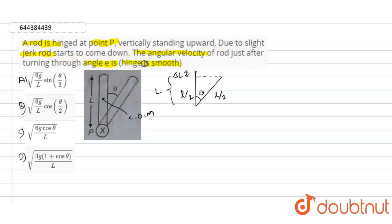This is the question that is given. So here we need to find out the value of the angular velocity of the rod just after turning through angle theta.